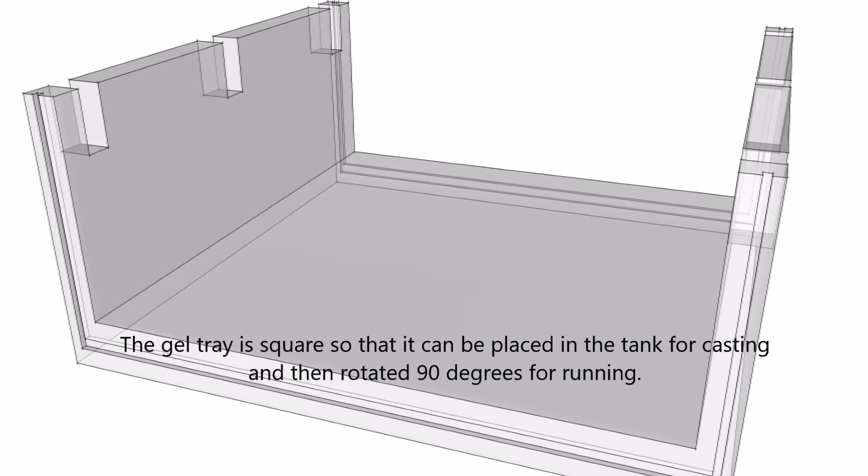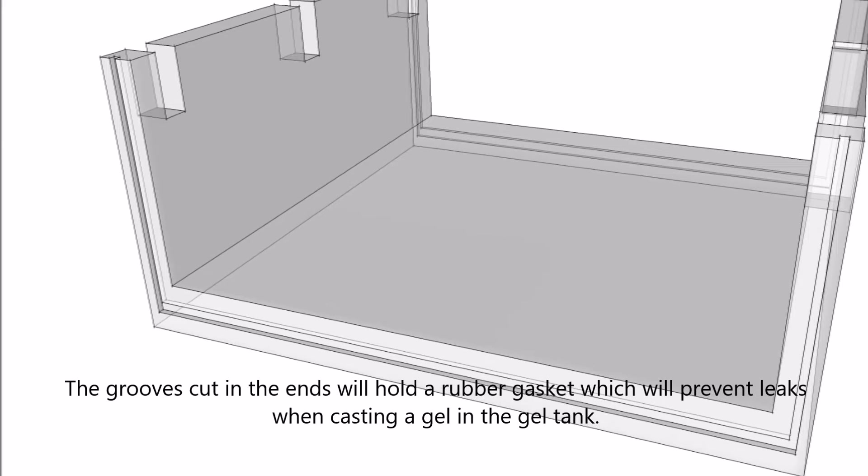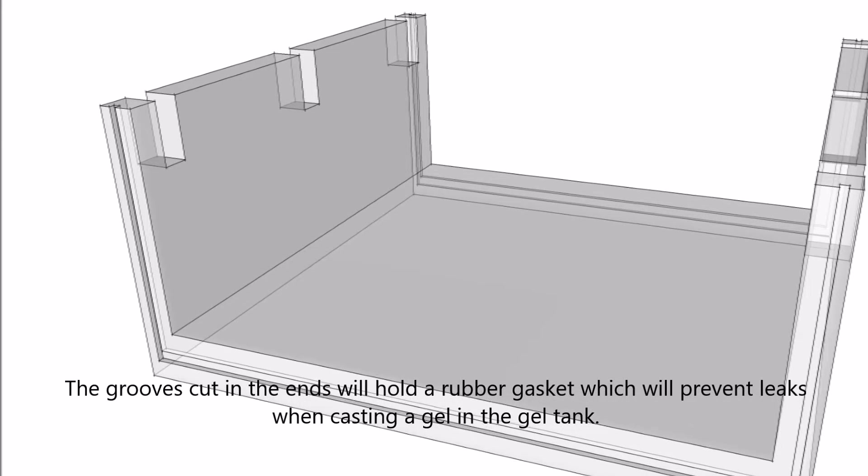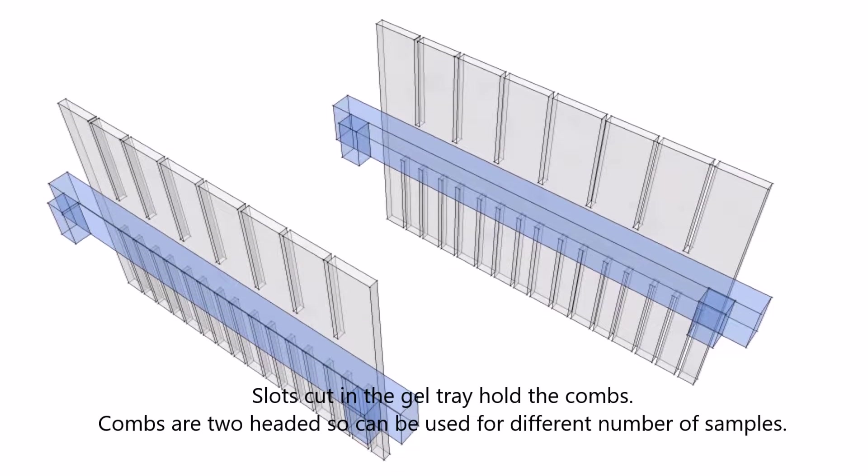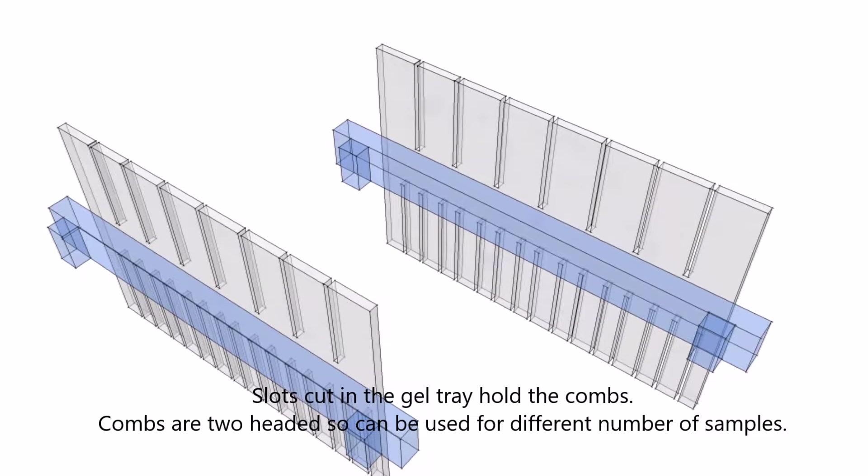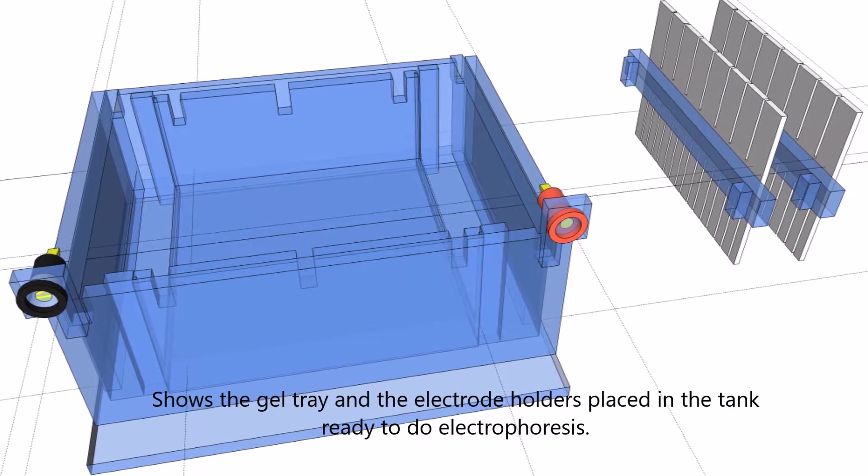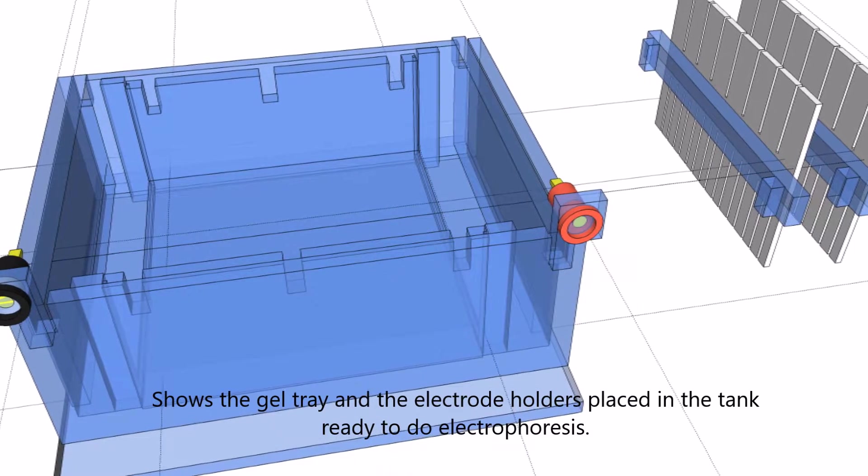The gel tray is where the gel will be held through which the molecules will pass through under current. You can see grooves cut in the end, so that will hold a gasket, and the gel tray fits both ways inside the holder so you can cast your gel. When you cast your gel, you put combs inside - these are two-headed combs, you can have different sample sizes. Here is the gel tray and the electrode holders assembled, and you'd be filling it with buffer and running it.